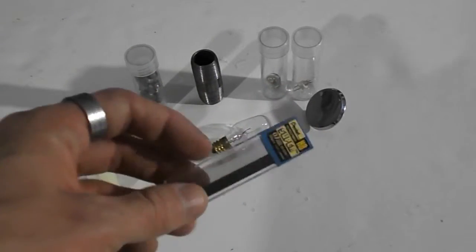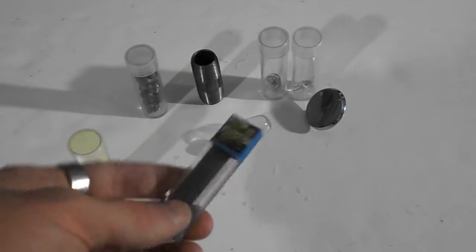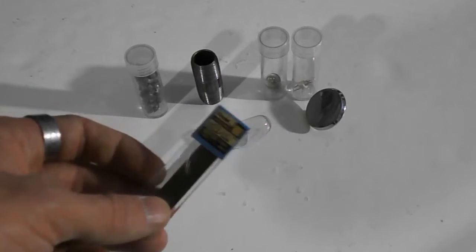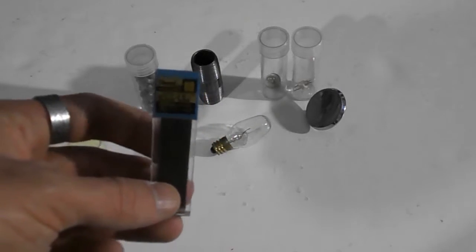You can also get pencil lead, which is mostly carbon. It's carbon with some kind of a binder to hold it together, but a pencil lead will serve you as a carbon sample.